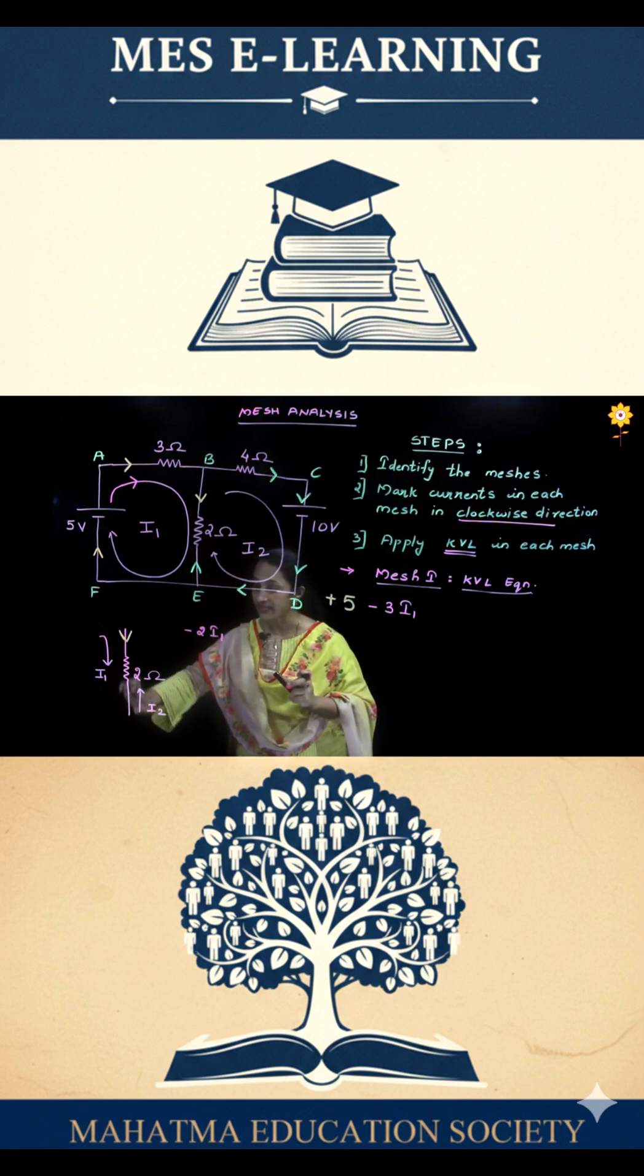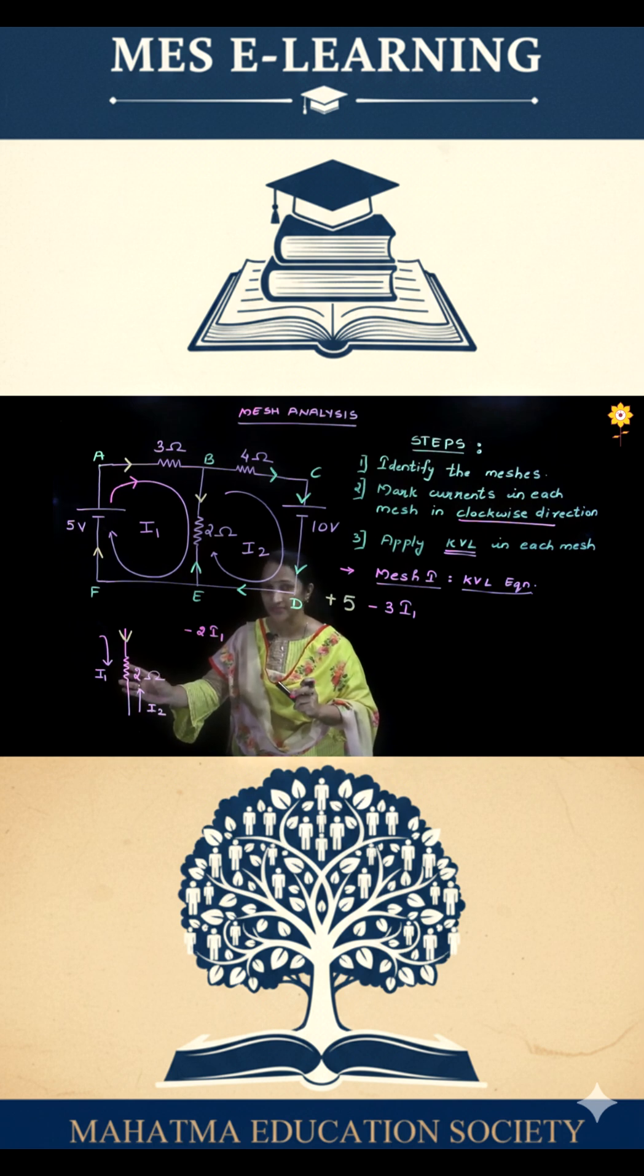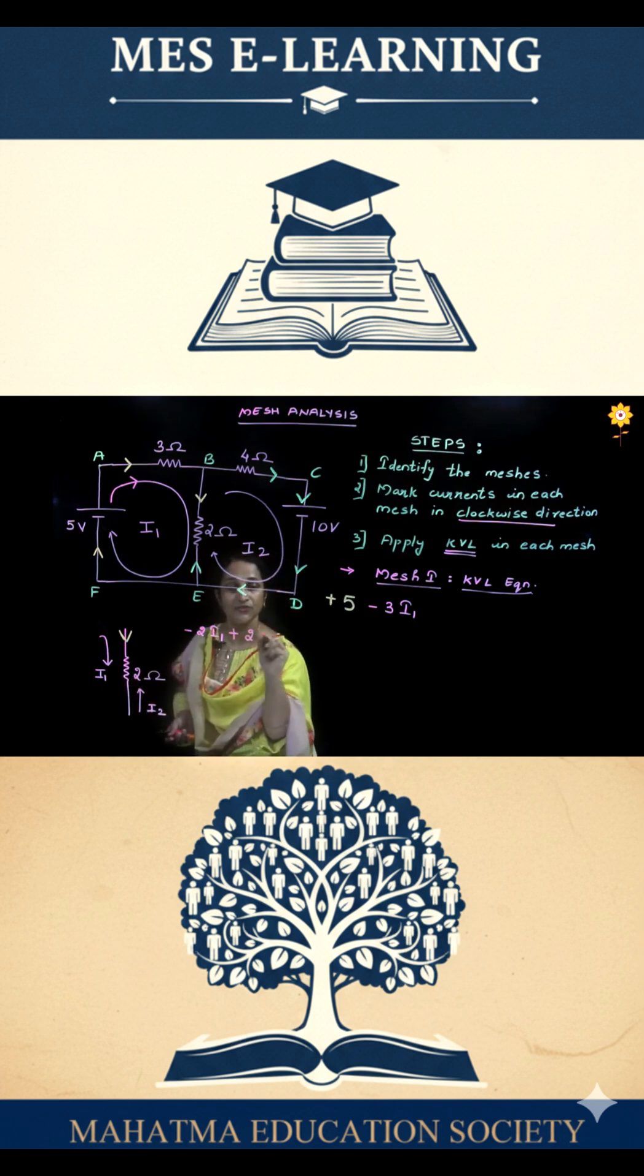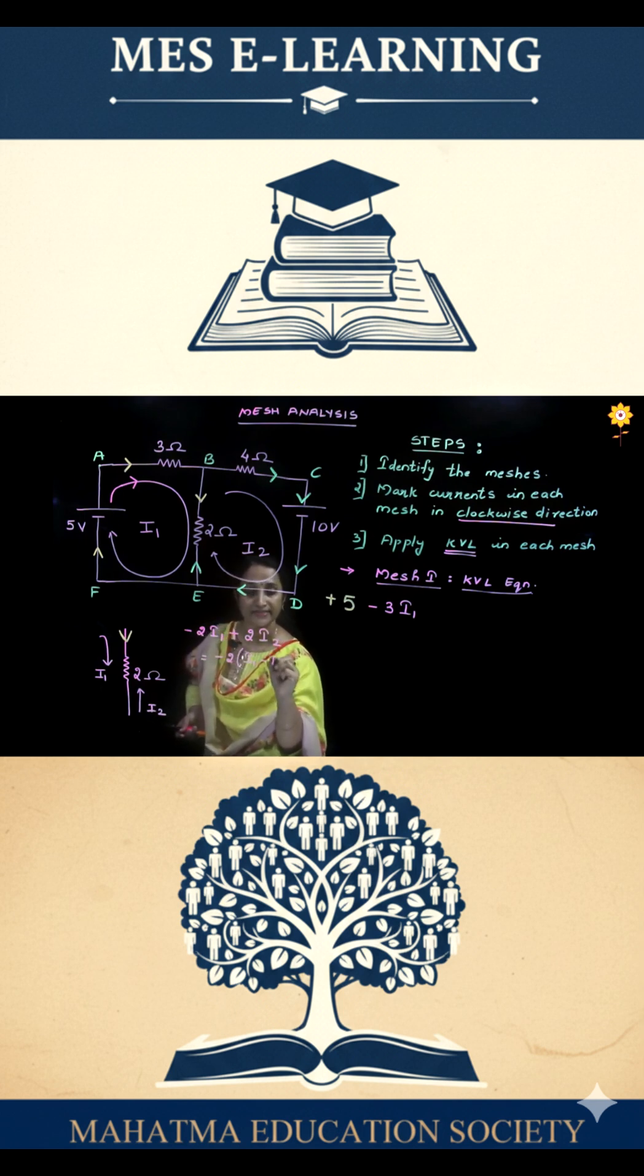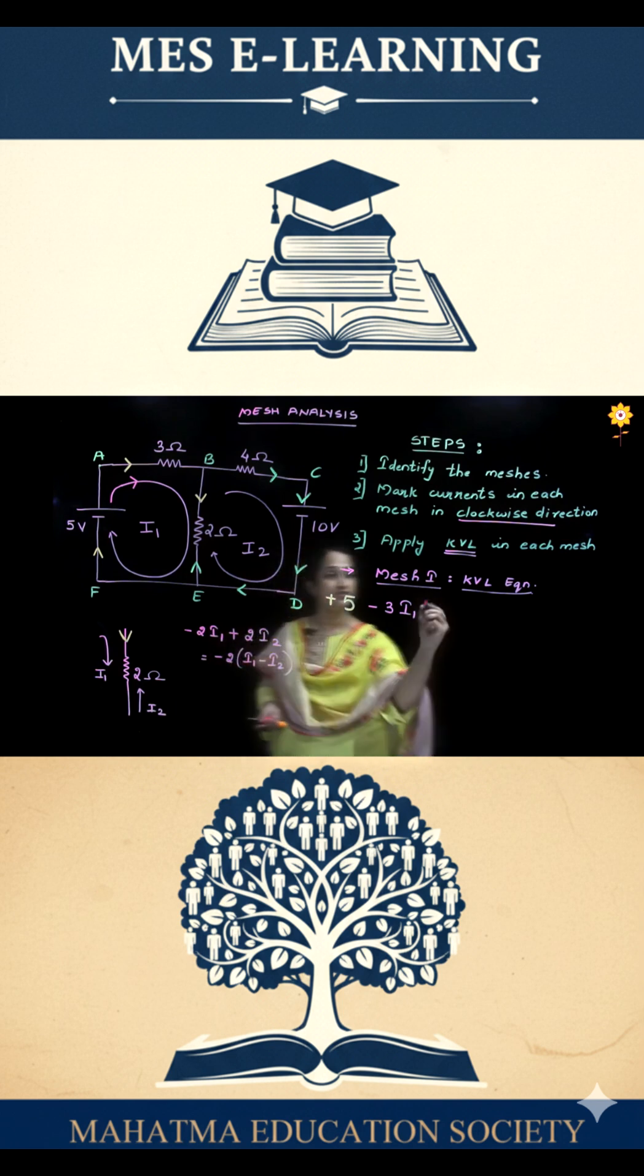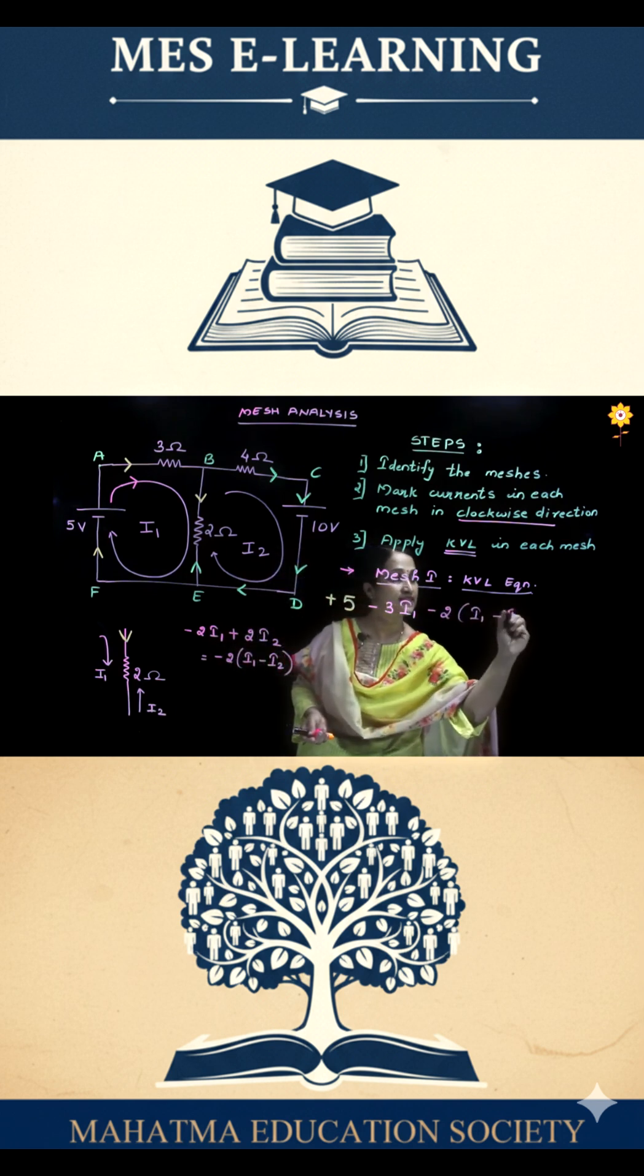And at the same time, you have a current I2 flowing through this 2 ohm resistance. And since the direction in which we are moving through 2 ohm resistance is opposite to the direction of this current, so the drop across these 2 ohms because of this current I2 can be considered to be plus 2 I2. So this can be written as, suppose we take minus 2 common, this can be written as I1 minus I2. So the same thing can be written in this equation as minus 2 into I1 minus I2.